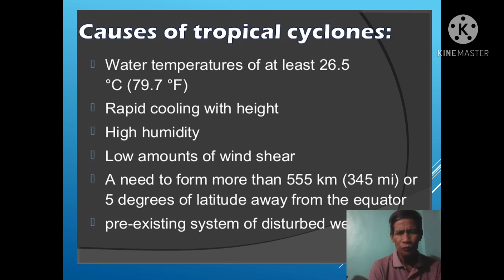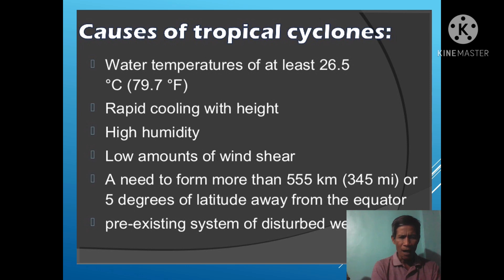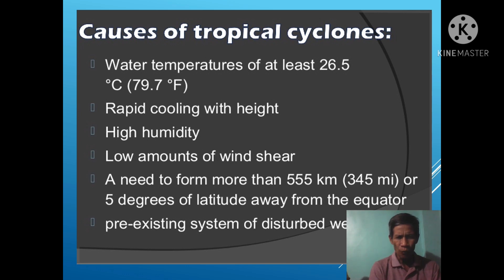Causes of tropical cyclones: water temperatures of at least 26.5 degrees centigrade; rapid cooling with height; high humidity; low amounts of wind shear; must form more than 555 km, or 5 degrees of latitude, away from the equator; and a pre-existing system of disturbed weather.